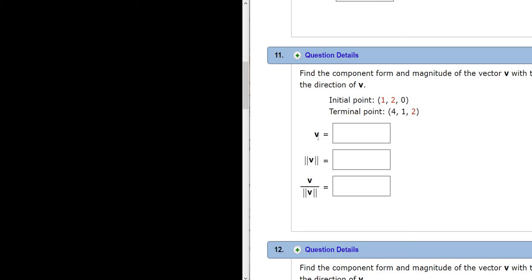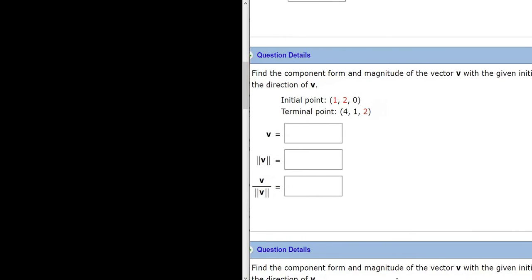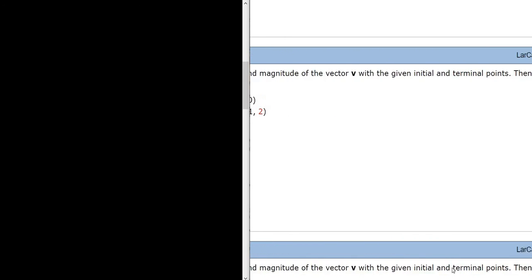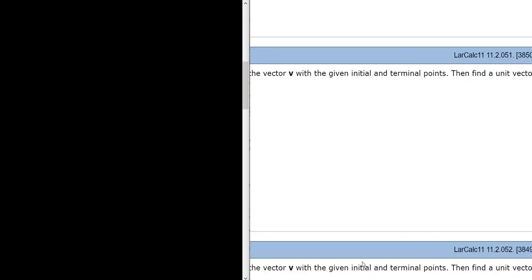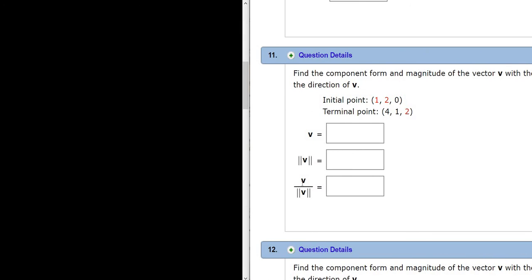This is a unit vector in the direction of this vector. If we read the directions, it actually tells us that. So it says find the component form and magnitude of the vector v with given initial and terminal points, then find a unit vector in the direction of v. That's what this piece here is. So once you take your vector v and you divide by the magnitude, you basically get a unit vector.